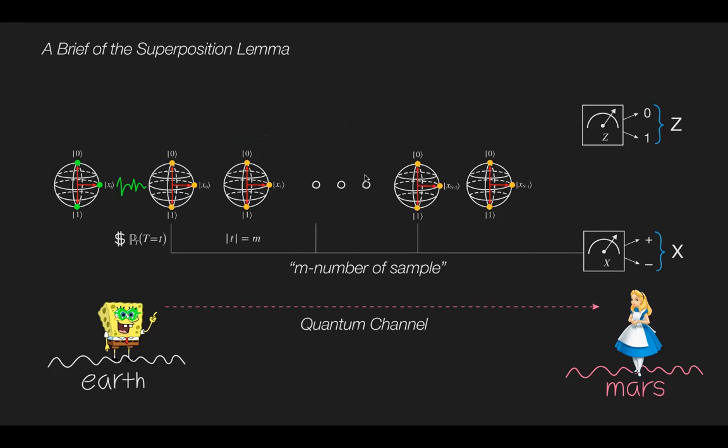Alice randomly picks m samples and measures them in the X basis. After her measurement, Alice has a string q consisting of m binary outcomes. By computing its relative Hamming weight, Alice can find the noise on the random source that Bob sent.